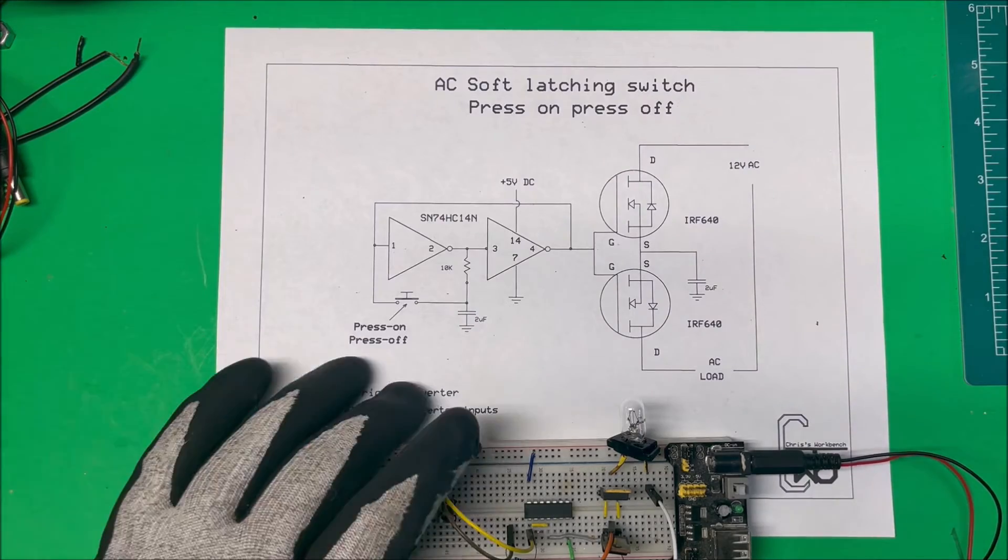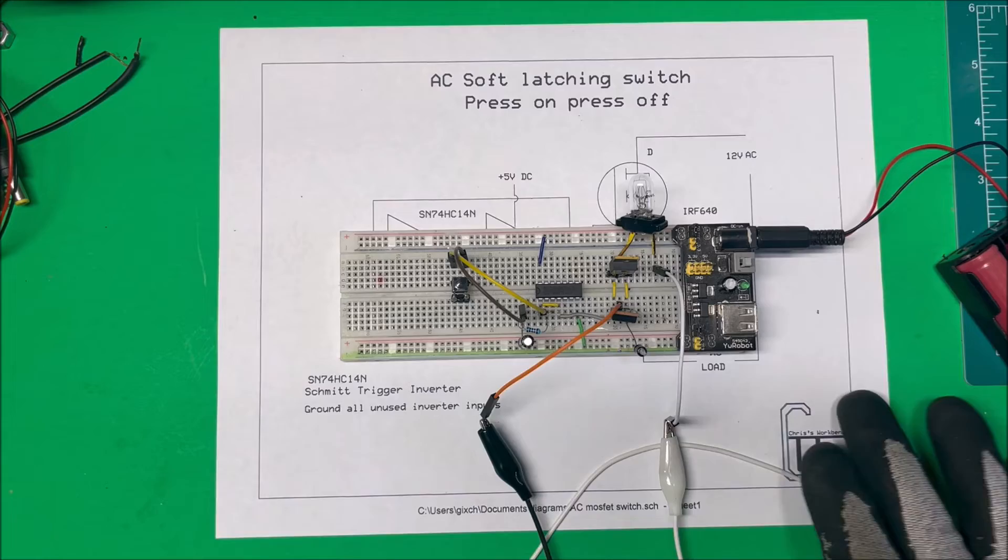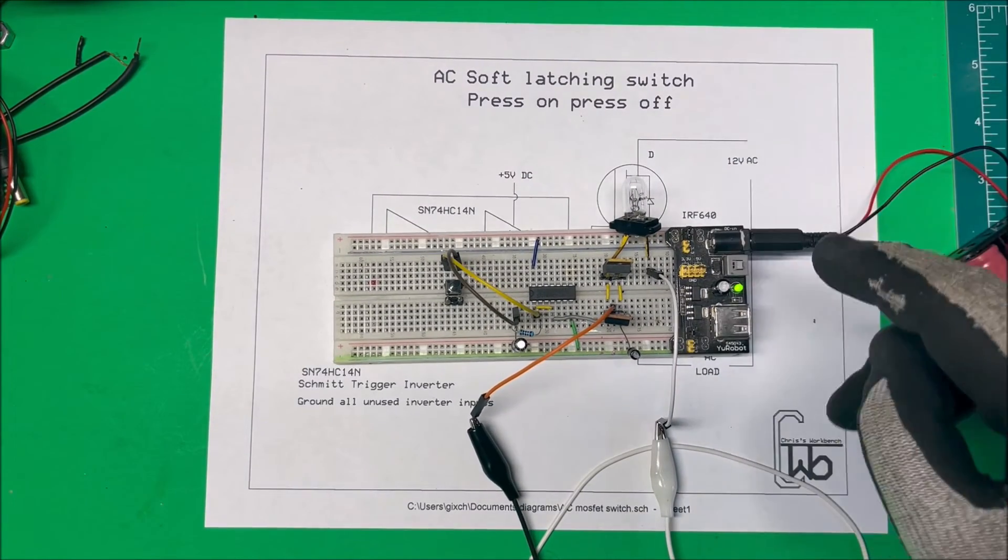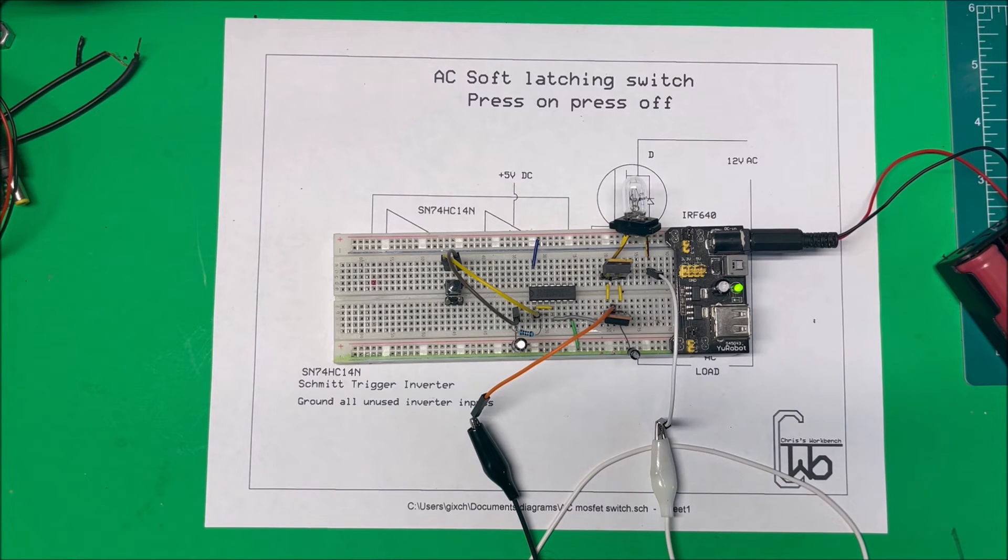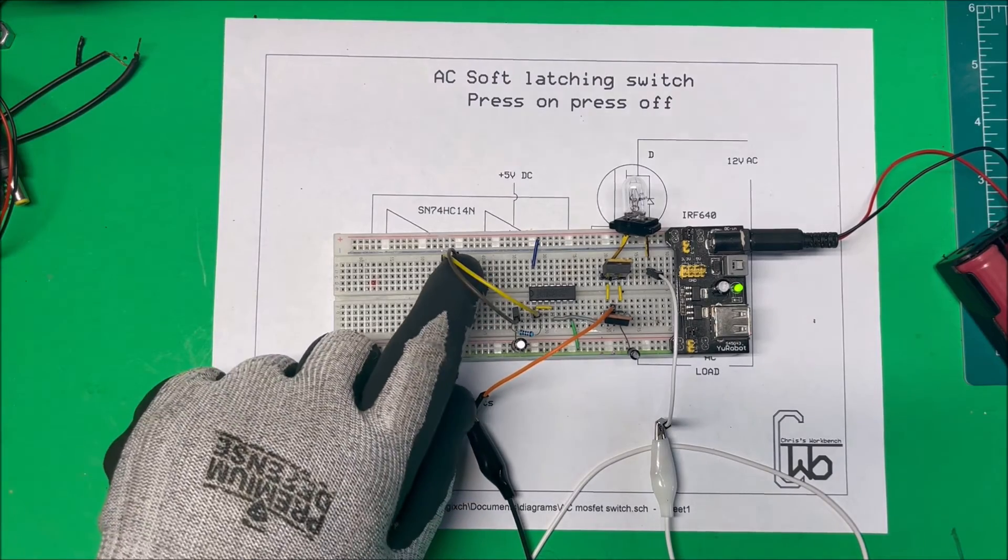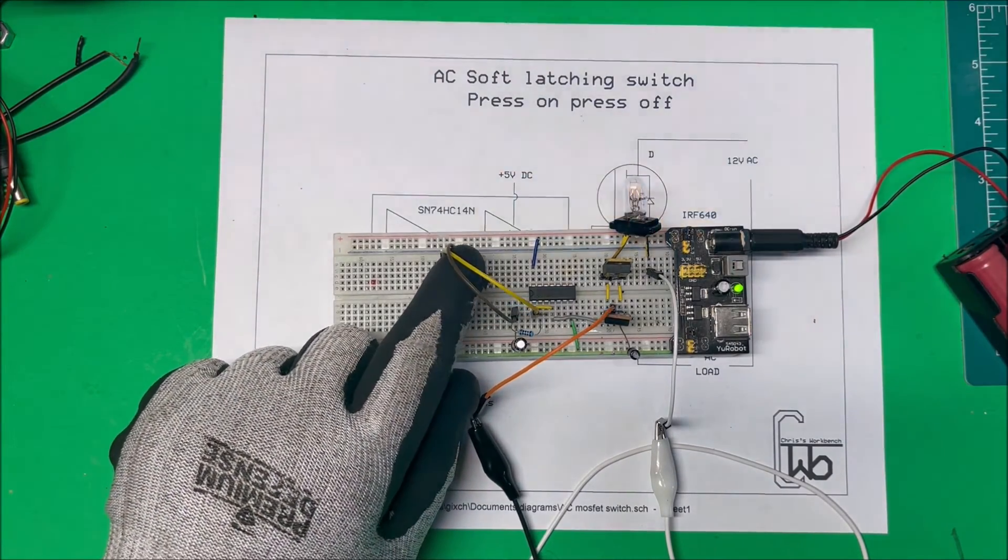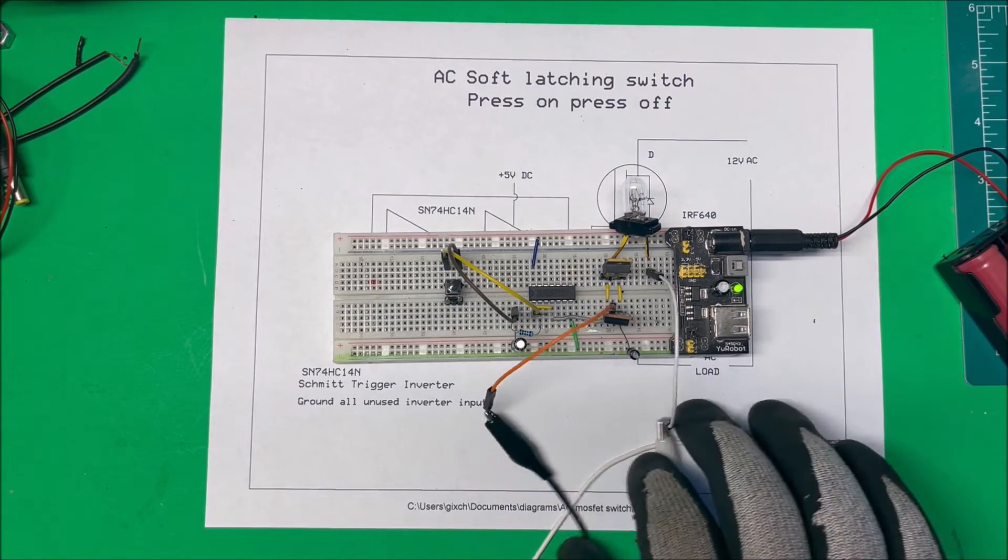So here it is here. I've got 12 volts coming in here, I'm going to turn the 5 volts on. Now eventually I'm going to take the 5 volts off the 12 volts AC and rectify it and give me five volts for the Schmidt trigger there. And I press it on, press it off, on off, on off, and it's controlling the AC here coming through there.